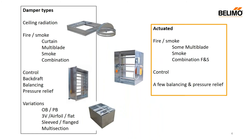Access to information is the most important thing - you cannot remember all the little details of the subject, but once you know where to look things up or who to talk to, it makes life easy. At the top left, the damper types for life safety: you've got ceiling radiation, a variety of fire smoke types, control dampers, backdrop balancing, pressure relief, and then variations like opposed blade, parallel, airfoil, and sleeve. There's a lot of detail about each one.